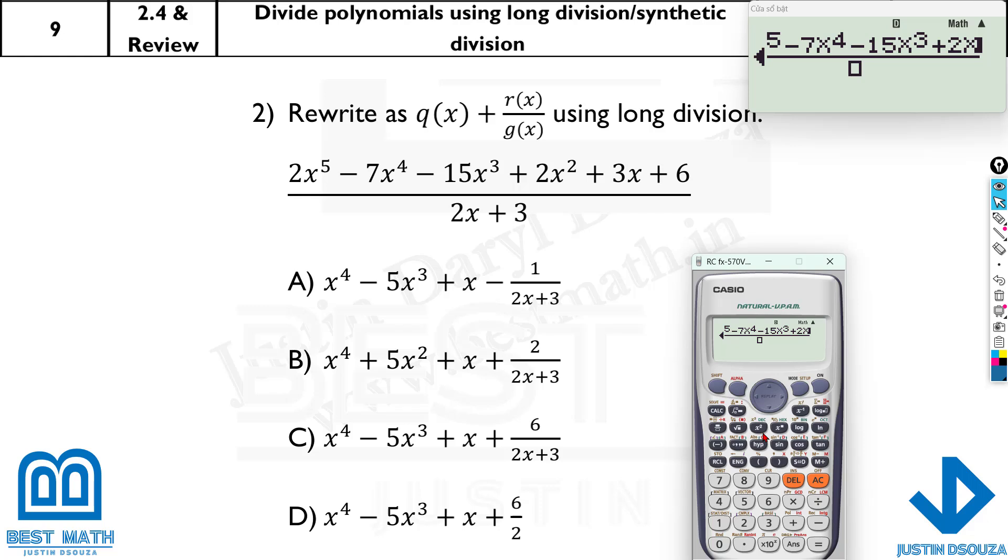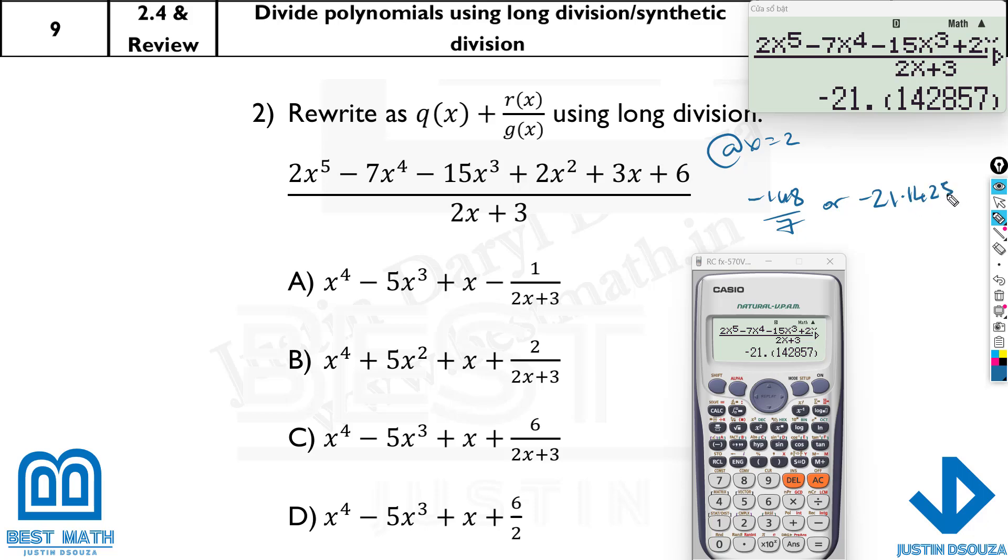It's good that I made the mistake, and I realized it at the beginning itself. So these mistakes can happen. You please be careful in your exams. 2x^5 minus 7x^4 minus 15x^3 plus 2x^2 plus 3x plus 6 divided by 2x plus 3. Now, I'll calculate. It's already saved as 2. It's negative 148 by 7.